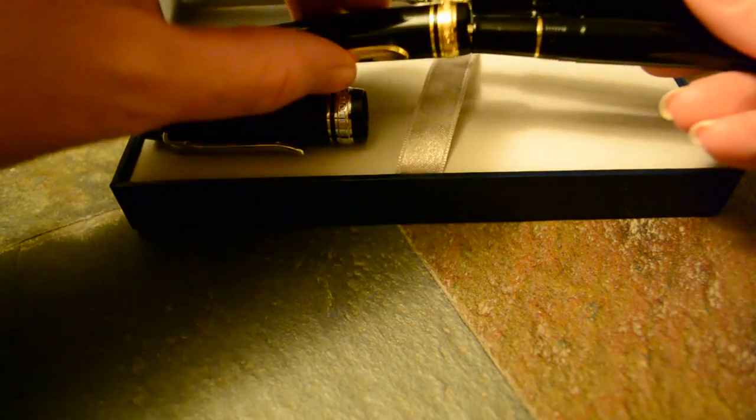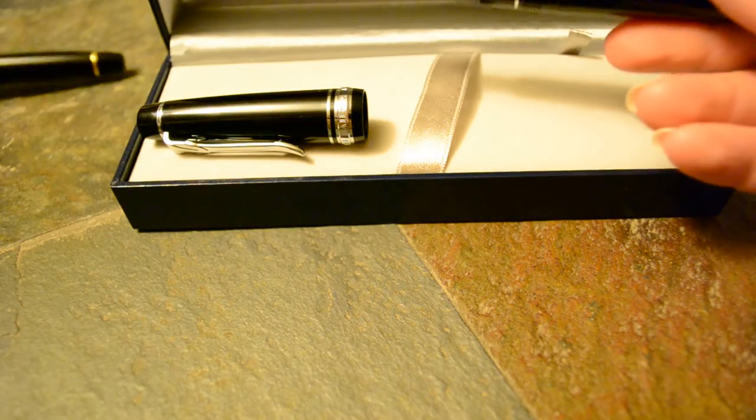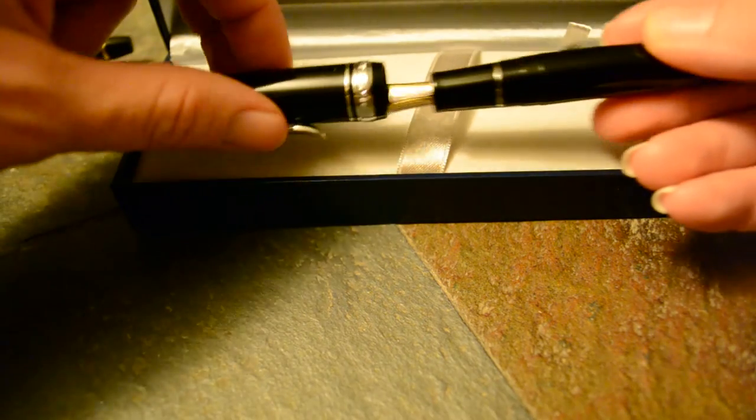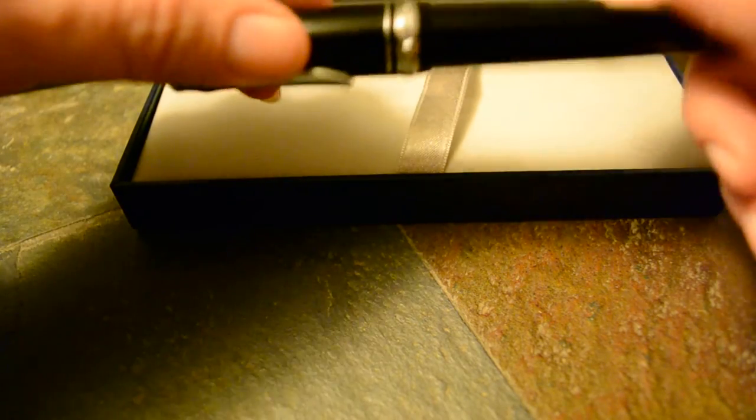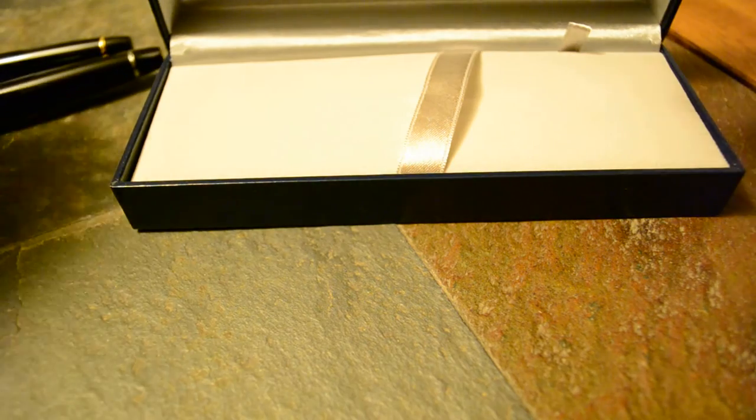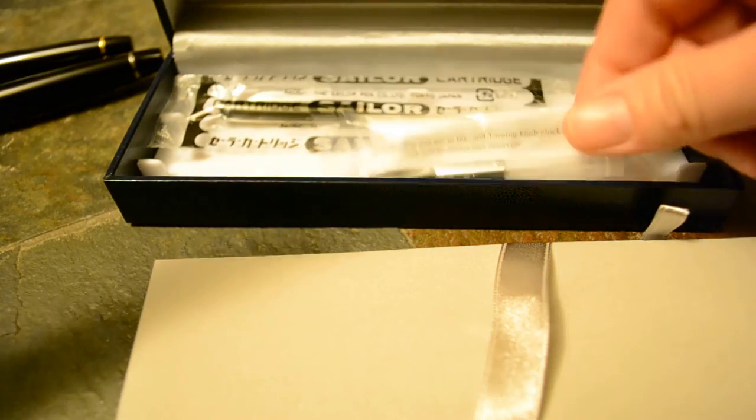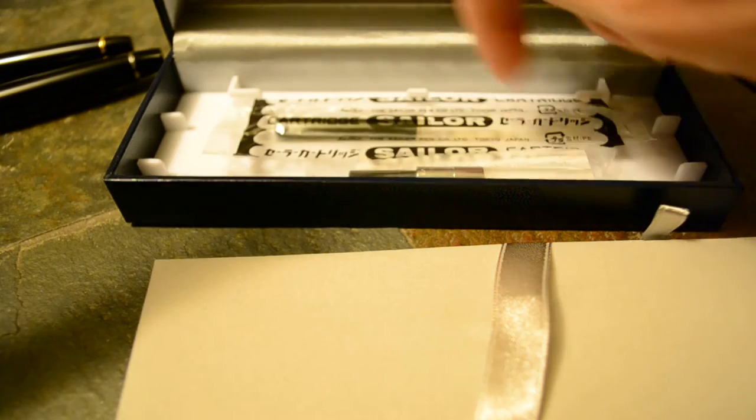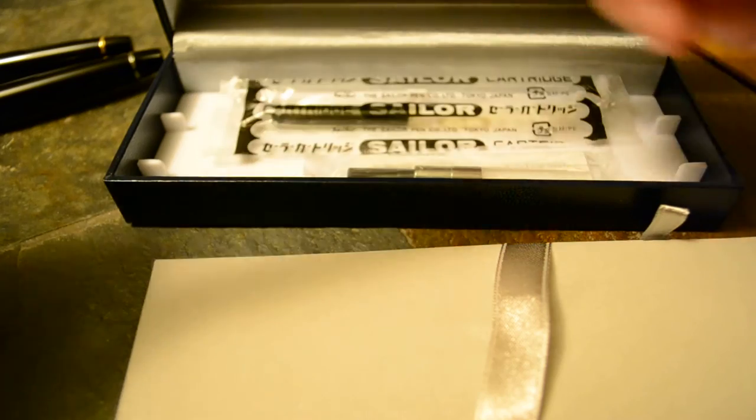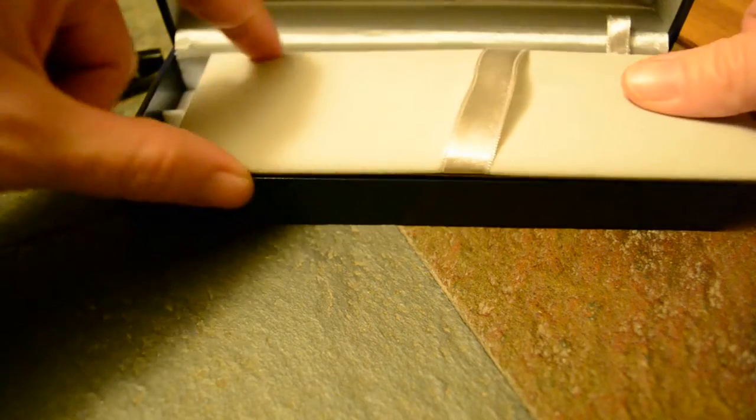In terms of how it writes, it is the same nib as a Sailor 1911, which I happen to love. If you've done any reading of my reviews, you'll know that. So it writes really well, which I'll show you in just a second. But I want to show you—it does come with its own converter, and it comes with two—I already installed one—but it comes with two cartridges as well. Just to kind of show you how they write, let me grab some 90 gram paper from Clairefontaine. I'll do a quick writing sample of both.